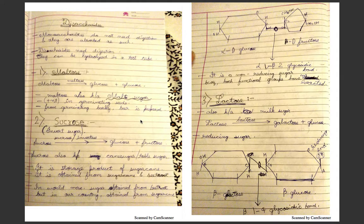Sucrose is also known as invert sugar. Sucrose is converted into glucose and fructose by the enzyme sucrase or invertase. Sucrose is also known as cane sugar or table sugar — the sugar we eat. It is the storage product of sugarcane, obtained from sugarcane in our country and from beetroot in other countries. Fructose in its inverted form — beta-D-fructose — combines with glucose to form sucrose.